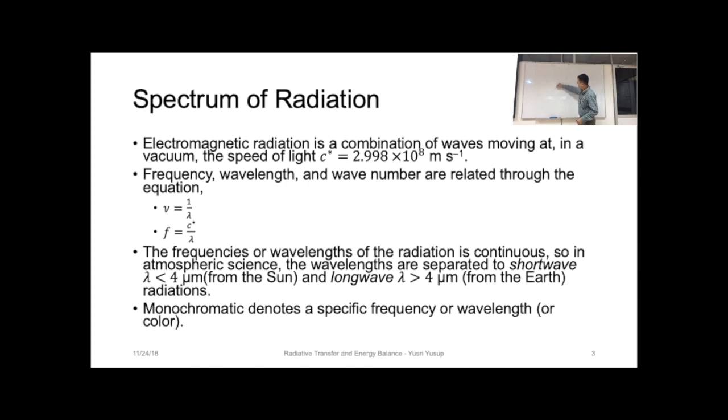Lambda is four micrometers - anything less than four micrometers we call shortwave radiation, anything more than four micrometers we call longwave radiation. Mostly, if it's shortwave, less than four micrometers, the radiation comes from the sun.